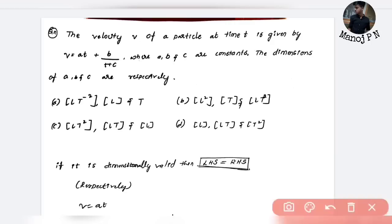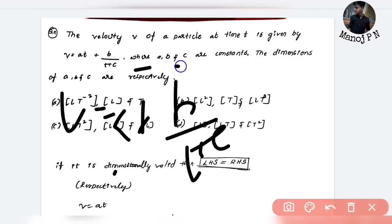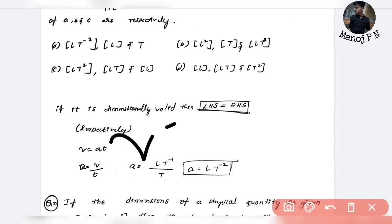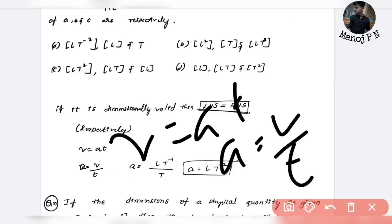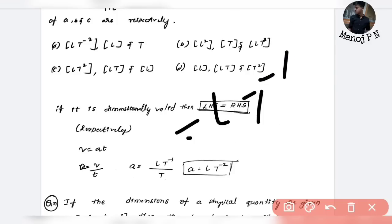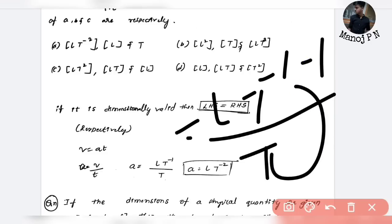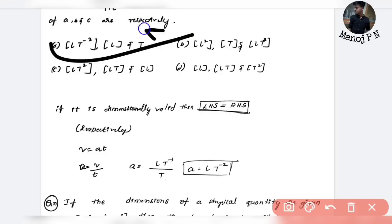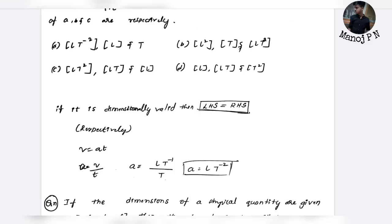The velocity V of a particle at time t is given by V = at + b/(t+c), where a, b, c are constants. The dimensions of a, b, c are to be found respectively. We compare each term. V equals at, so a equals V/T — that gives LT⁻². Then b/(t+c) must also equal velocity, so b has dimensions of LT⁻¹ multiplied by T, giving L. So a = LT⁻², b = L.